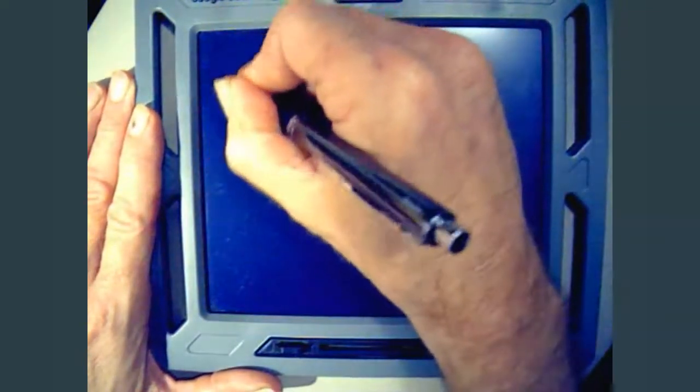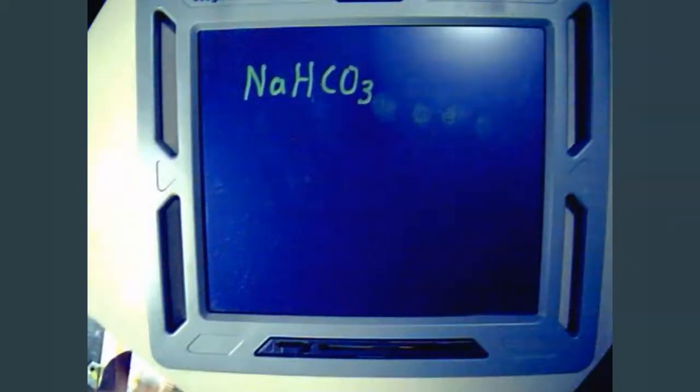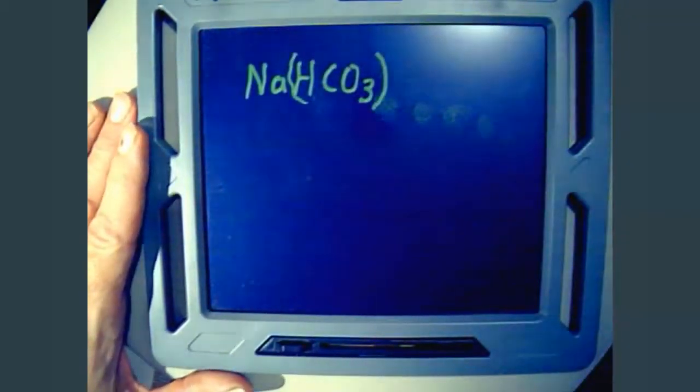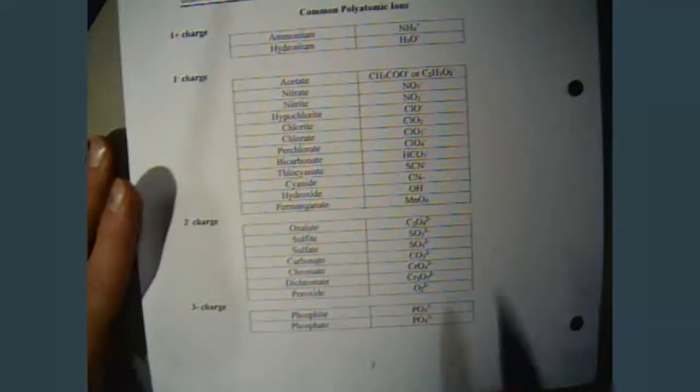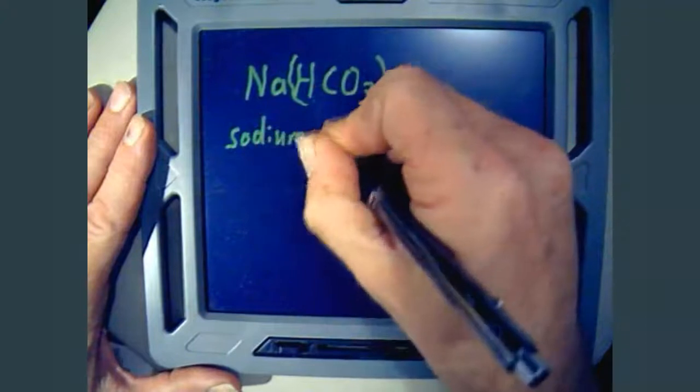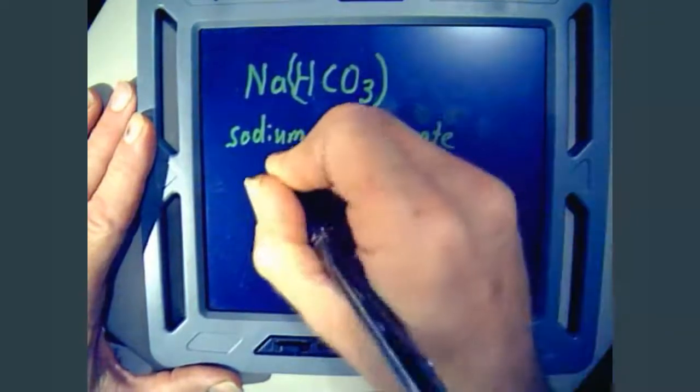So let's try just another example or two. First of all, how about NaHCO3? So according to your flowchart, the first thing you want to do is see if you have a binary compound. Well, we have sodium, hydrogen, carbon, and oxygen. We have four elements, so it's not a binary compound. Second thing, look for a polyatomic ion. Well, we know Na is a metal, so everything after that is going to be the polyatomic ion, HCO3. Then you look on your polyatomic ion sheet, and we find HCO3. Oh, HCO3, bicarbonate. So the name of this compound is sodium bicarbonate, commonly known as baking soda.